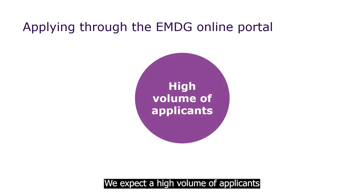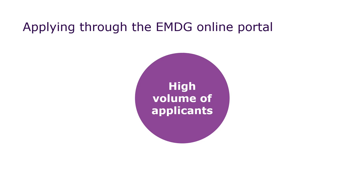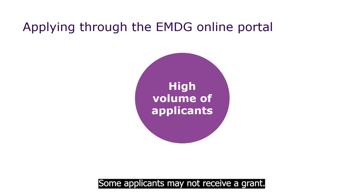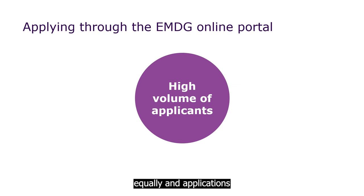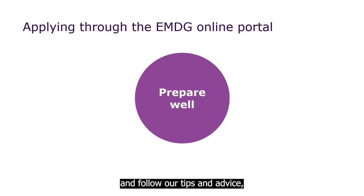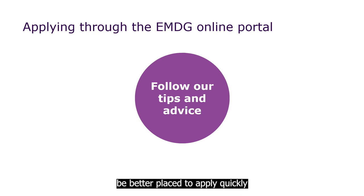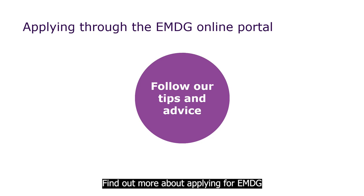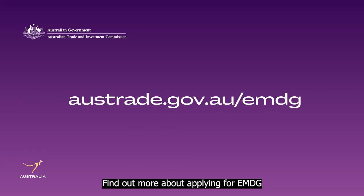We'll assess your application and advise you of the outcome in writing. We expect a high volume of applicants for the next round, and some applicants may not receive a grant. Austrade treats all applicants equally and applications will be assessed in the order they are received. But prepare well and follow our tips and advice and you'll be better placed to apply quickly and confidently when the portal opens. Find out more about applying for EMDG on the Austrade website.